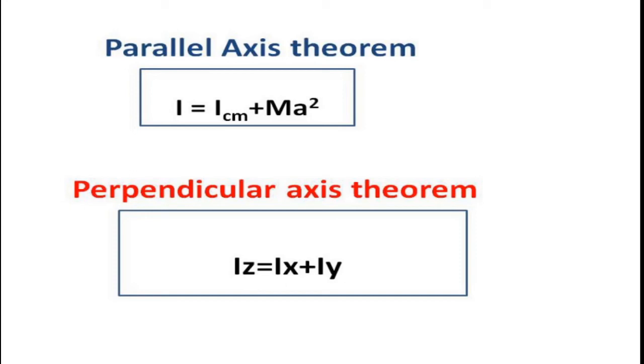The moment of inertia is equal to I_cm plus M·d square, where I_cm is the moment of inertia about the parallel axis through the center of mass, M is the mass of the body, and d is the distance between the two axes.